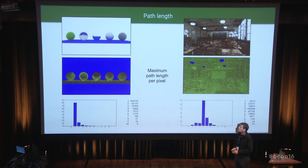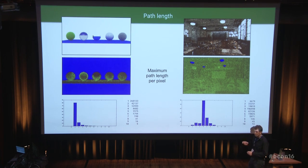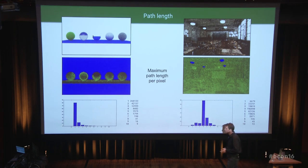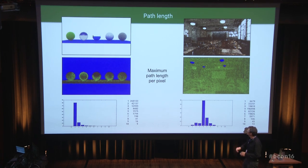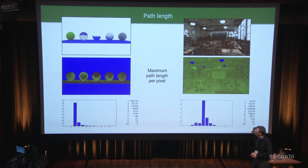One thing you can do with this database is look at path lengths for different scenes. Here we have the classroom scene from the Cycles benchmark set — a very nice scene with lots of reflections and shiny things. The middle image shows the maximum path length per pixel. Blue spots indicate a path length of one — the ray basically hit the background and nothing happened. You can see that paths hitting light sources were immediately terminated. The greener the pixel, the longer the path. Red spots indicate the longest paths. Even for the simple scene, there are paths of length 10 — lots of bouncing around.